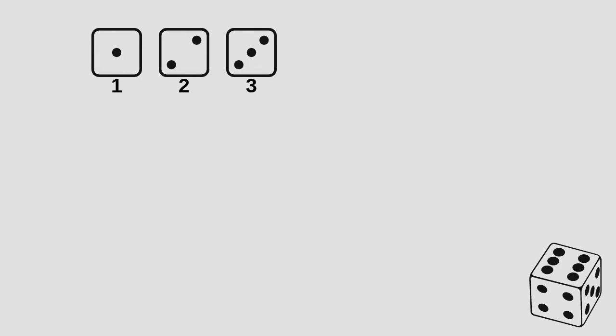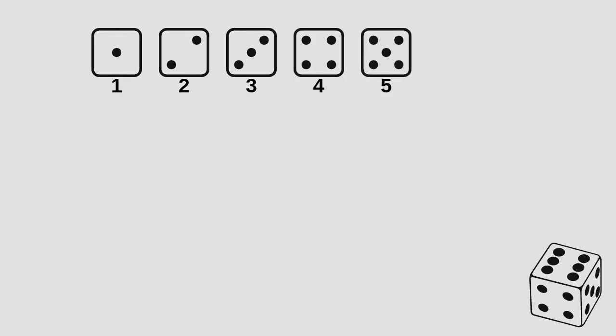Suppose you want to know the probability of rolling a six when you roll a die. As we know, there are six possible outcomes when rolling a die: we can roll a one, a two, a three, a four, a five, or a six.